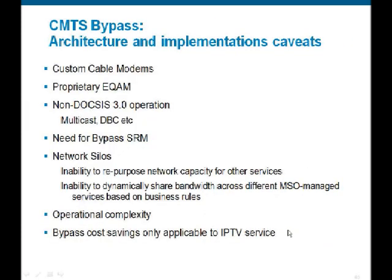The drawbacks of the bypass architecture are two separate administrative domains controlling video versus other services, and video resources cannot be shared with other services when idle. Custom cable modems are needed since two different entities control them. The edge QAM converts MPEG input to DOCSIS framing but does not need to be DOCSIS 3.0 capable or communicate with a DTI server since it passes no DOCSIS layer 2 MAC management messages. The bypass model moves away from the integrated triple-play model over a single transport infrastructure.